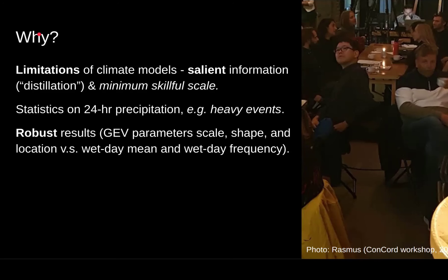We want to derive robust results. When we use general extreme value theory, we often have three parameters — scale, shape, and location — which are fitted on the tail of the distribution or a small subset. Their estimates can vary quite significantly depending on how the data is sampled, because there's a small number of data points. Instead, we focus on the wet day mean precipitation and the wet day frequency, which are estimated from the bulk of the data set, so they are much more robust estimates.